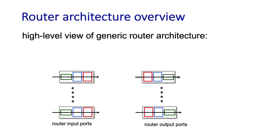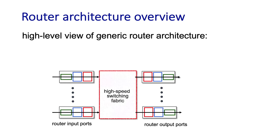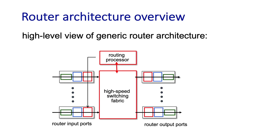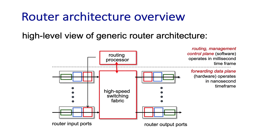Packets are moved from the input ports to the output ports under router control through a switching fabric — this is really the heart of a router, the place through which all packets must pass. It's really a network within a network router. A router also has a routing processor, often just a regular CPU, that performs control plane functions, controls the switch fabric, and installs forwarding tables at the input ports. We can also clearly distinguish the router components that belong to the data plane, operating at high speed and implemented in hardware, and the control plane, implemented in software and running at slower timescales.